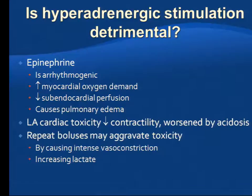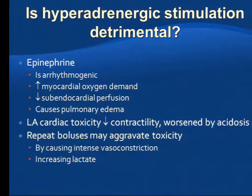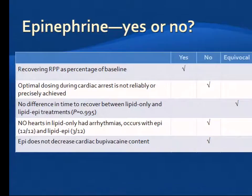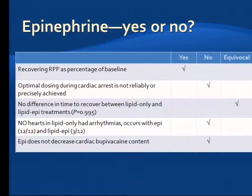Epinephrine is arrhythmogenic, increases myocardial oxygen demand, decreases subendocardial perfusion, and causes pulmonary edema. In bupivacaine-induced cardiac arrest, high-dose epi probably makes things a lot worse. Lou looked at lipid-epinephrine combination and control studies in resuscitation, finding that while you do get recovery of rate pressure product as a percentage of baseline, epinephrine is problematic to dose appropriately. There was no difference in time to recovery between lipid-only and low-dose lipid groups. None of the lipid-only hearts had arrhythmias, and epi itself does not remove bupivacaine. The ASRA guidelines now recommend keeping epinephrine boluses to less than 1 microgram per kilogram.